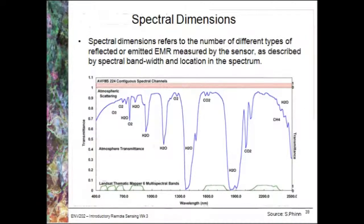Spectral dimensions refer to the portions of the electromagnetic spectrum that a sensor is measuring within. Looking at this graph, the blue line shows atmospheric transmittance and the green line shows where the Landsat Thematic Mapper bands — bands one through five and seven — were placed. They've been placed in areas of maximum atmospheric transmittance, since there's little point placing a spectral band where not much light gets through the atmosphere, for example due to water absorption. The sensitivities are relatively broad, with six bands, and there's even broader sensitivity in the mid-infrared band.